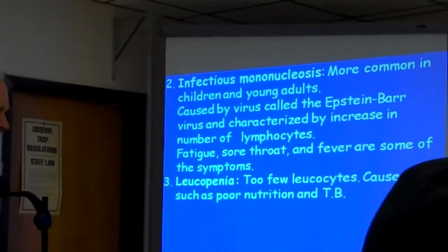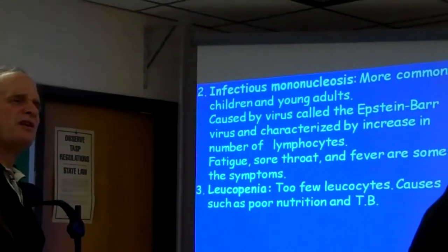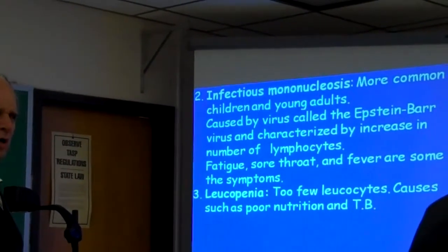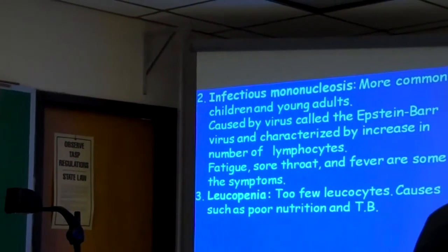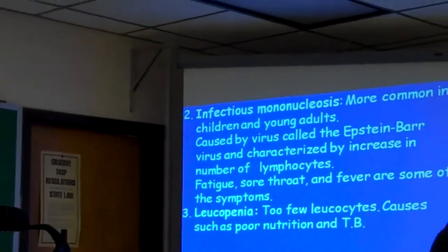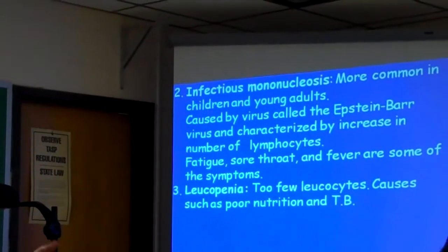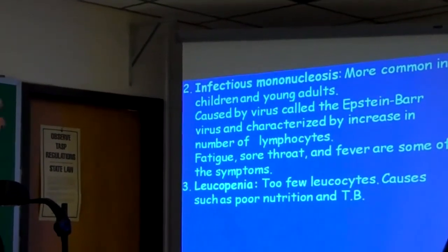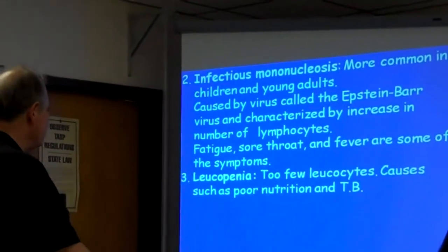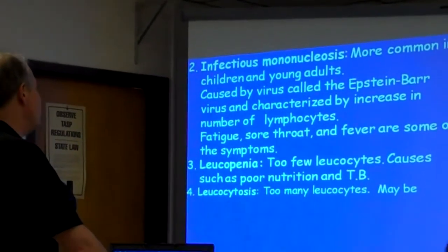Leukopenia — 'penia' means poor. Leukopenia has reference to a poor, or low, amount of leukocytes. That's leukopenia — causes include poor nutrition, TB, various things.